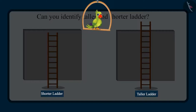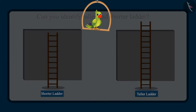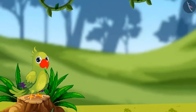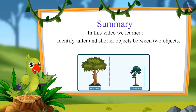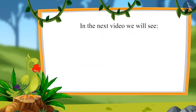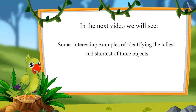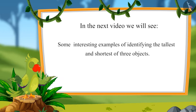So children, I hope that you enjoyed identifying and comparing taller and shorter objects. Now you can identify the tall and short objects around you and compare them to tell which is taller and which one is shorter. That's all for today children. In this video, we learnt to identify taller and shorter objects between two objects. In the next video, we will see some interesting examples of identifying the tallest and shortest of three objects. Till then, bye children.